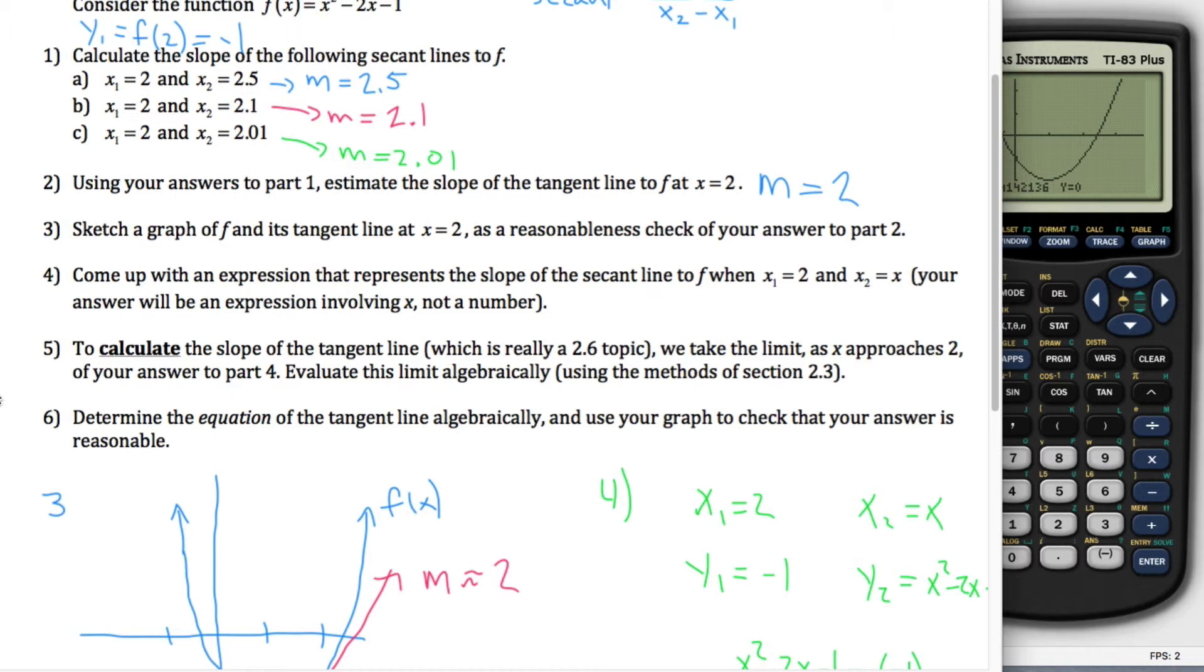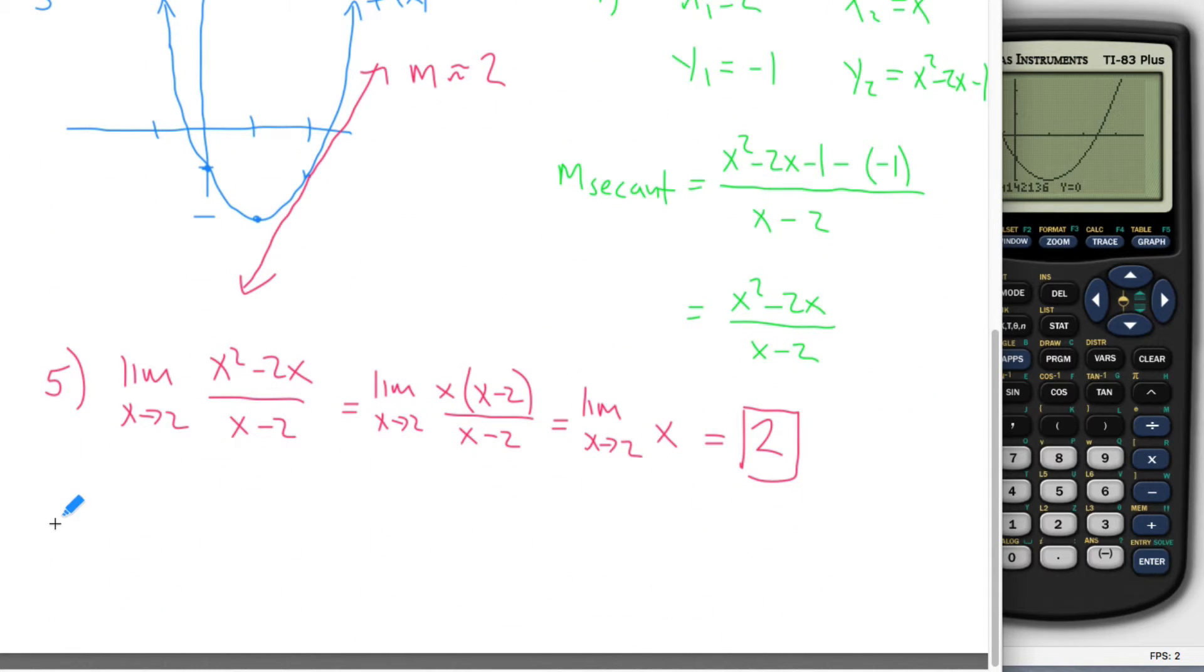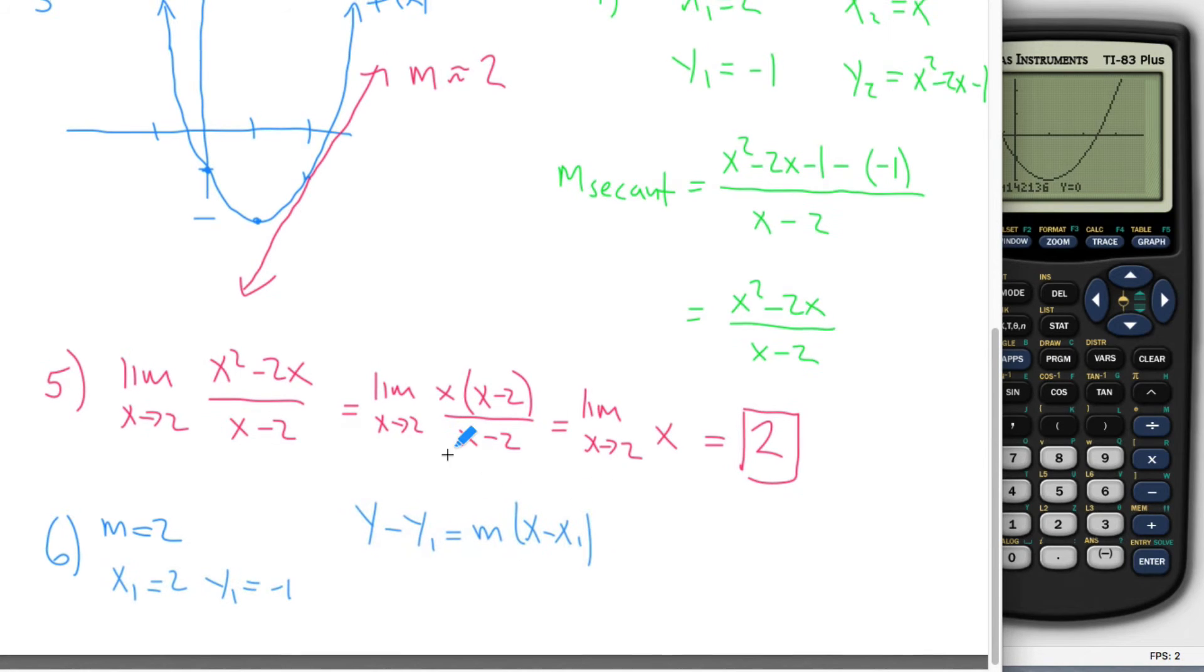For 6, it says determine the equation of the tangent line algebraically. So this line that I drew in red here, determine its equation algebraically. I already know that m is equal to 2, so I need one point and a slope. Slope is 2. The one point is this point right here, this point has an x coordinate of 2 and a y coordinate of negative 1. So I got x1 equals 2, y1 equals negative 1. I can take y minus y1 and set that equal to m times x minus x1. This is point slope form of a line. So y minus negative 1 is equal to m times x minus 2. I'll take this 2 and distribute it through. You get y plus 1 is equal to 2x minus 4 and therefore y is equal to 2x minus 5.